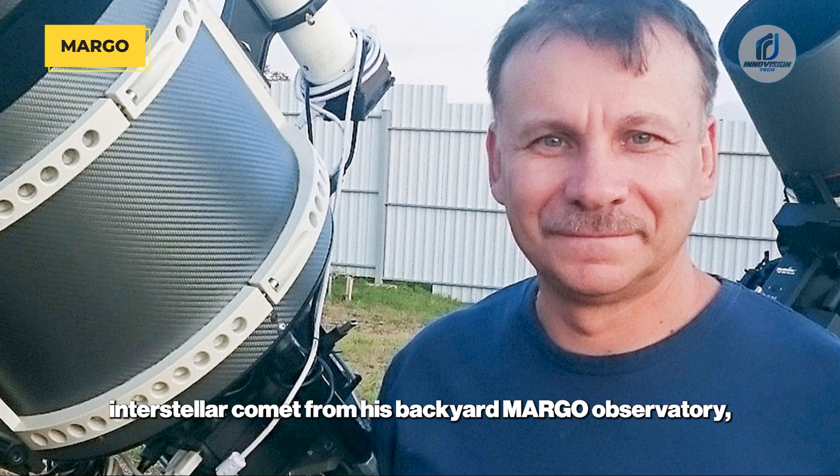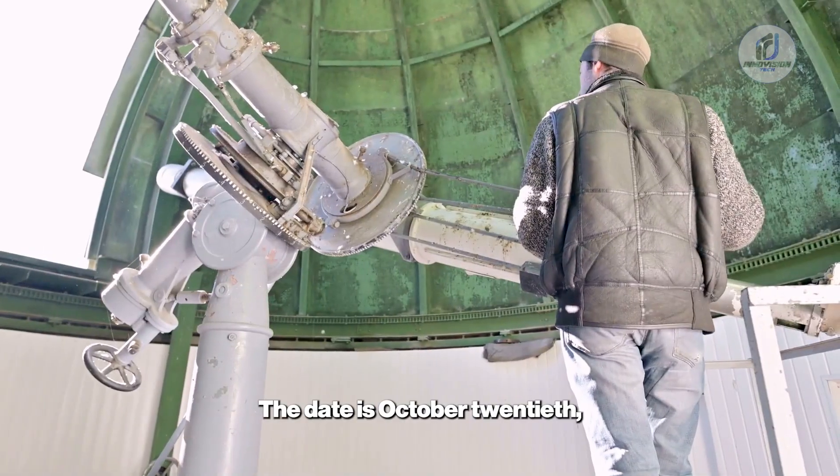The Chilean Frame: It all starts with a single unexpected image. Imagine an amateur astronomer, much like the legendary Gennady Borisov who discovered the first confirmed interstellar comet from his backyard Margo Observatory, peering at the sky from the clear darkness of Chile's Atacama Desert. The date is October 20, 2025. Her equipment, a 150-millimeter refractor, is pointed at the coordinates for a newly tracked interstellar object, 3I Atlas.